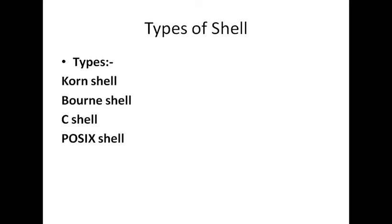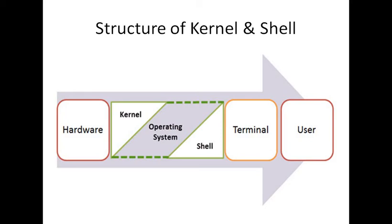Now let's discuss the difference between kernel and shell. Here you will see the structure of kernel and shell — it is a very simple structure. The hardware is here; the green section represents our operating system. The kernel is shown on the hardware side, and the shell is shown on the terminal side. The kernel works on the hardware end, and the shell works on the user end.